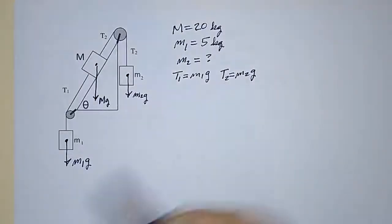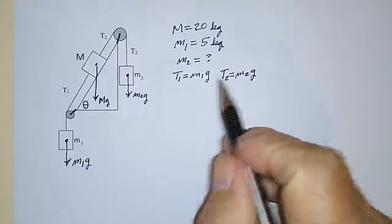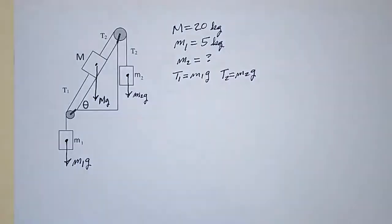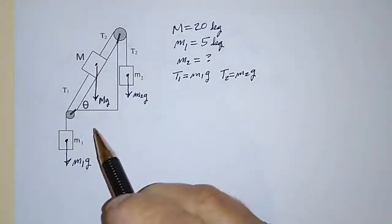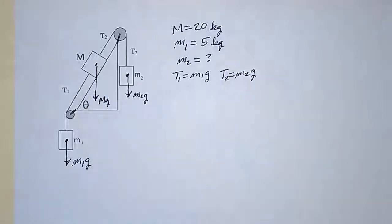And it's tempting to say, well, T1 and T2 are equal, just like it was on the flat table, so that they'd be the same, but obviously that's not the case. So we have to figure out the difference in T1 and T2.